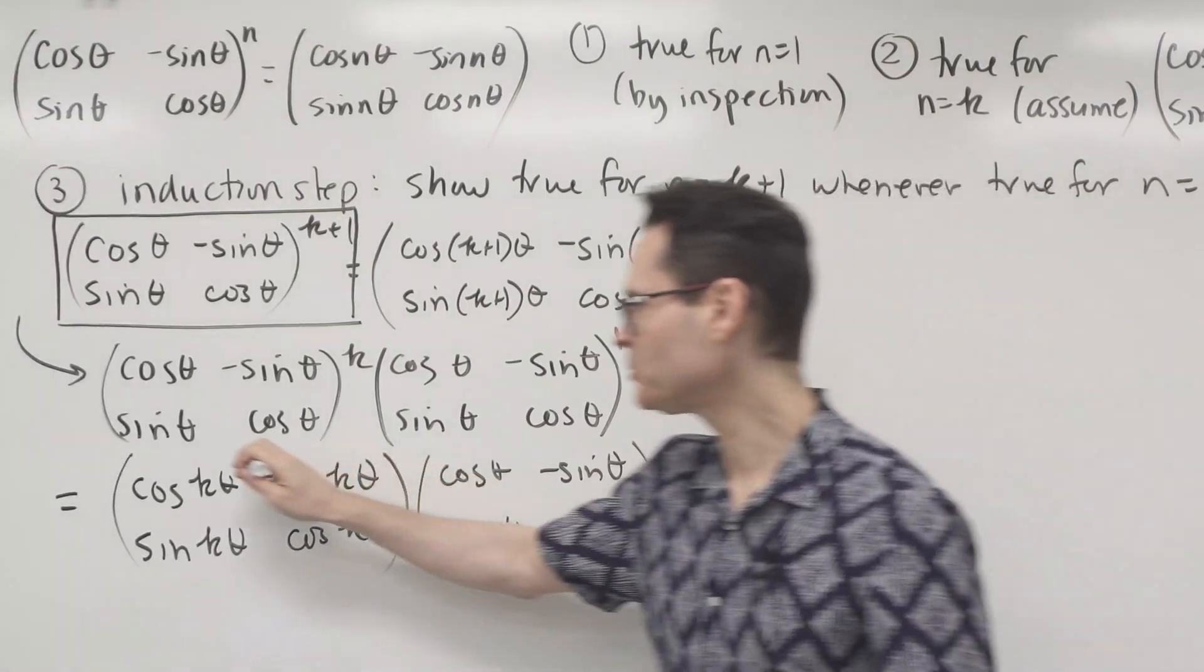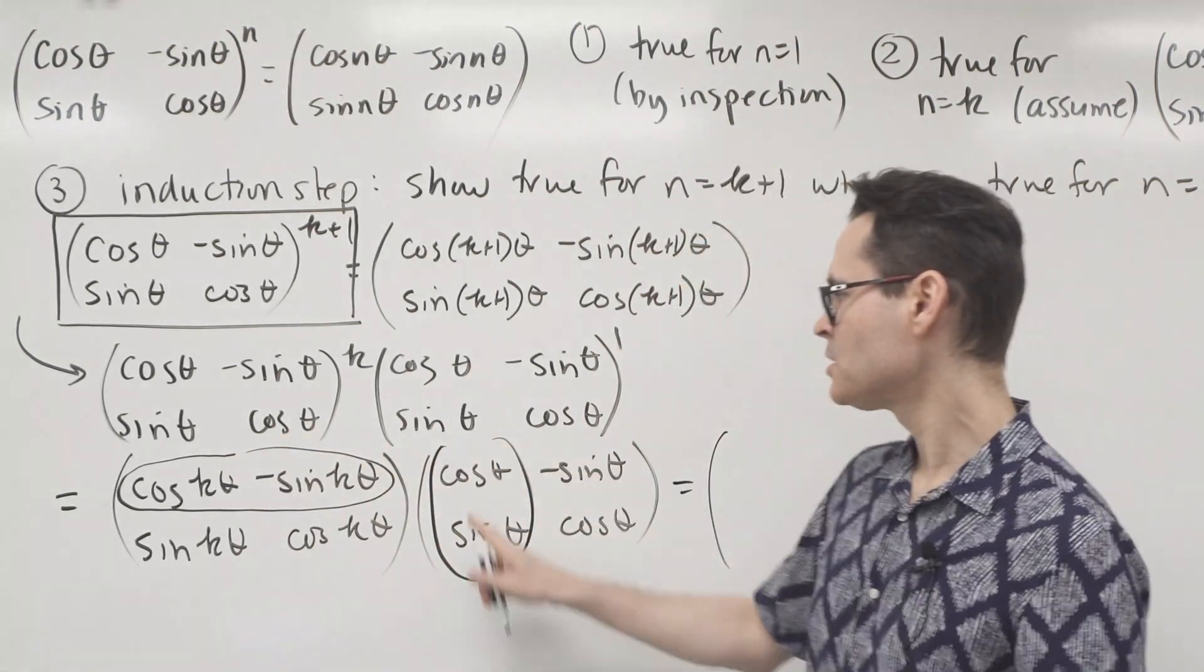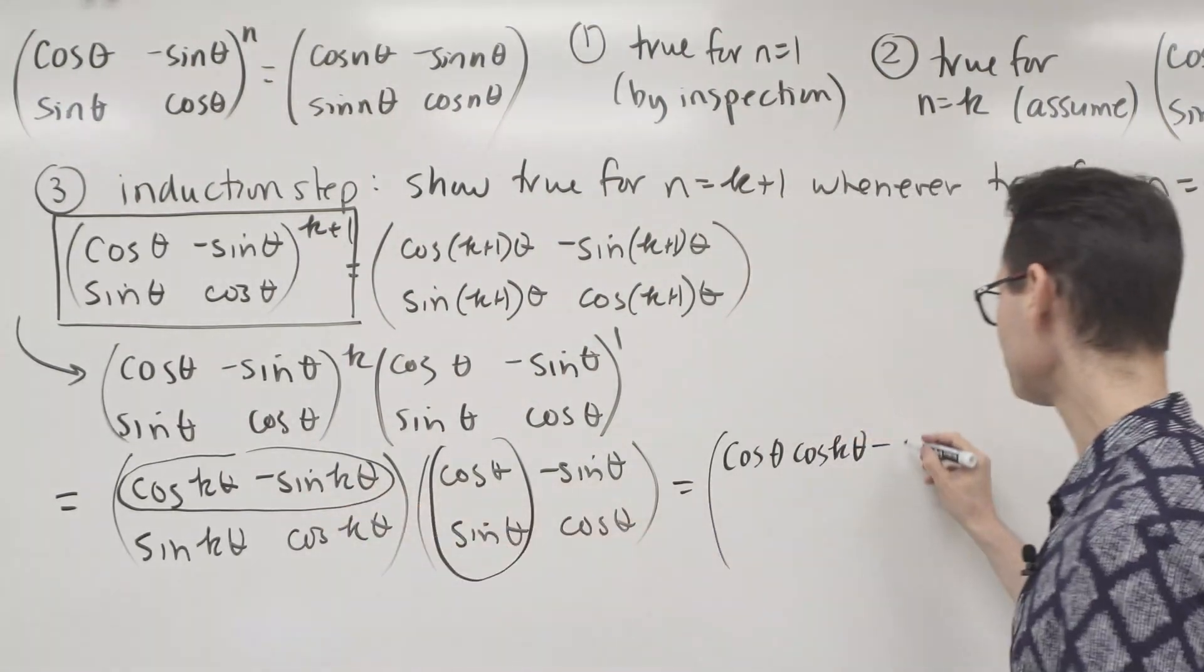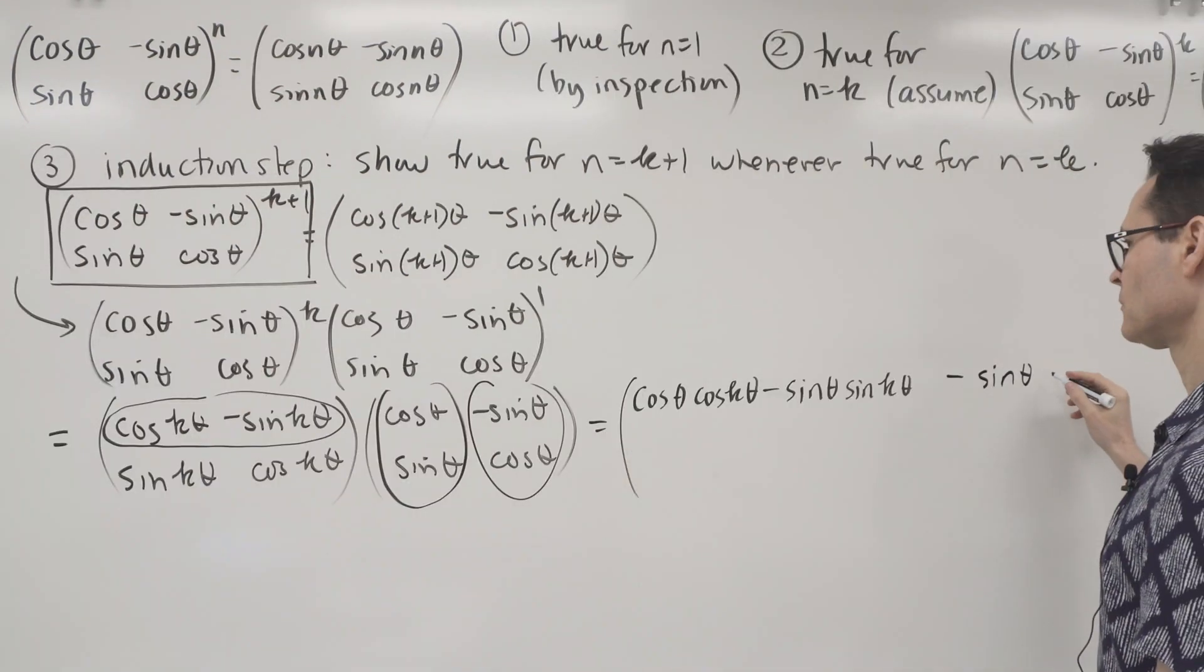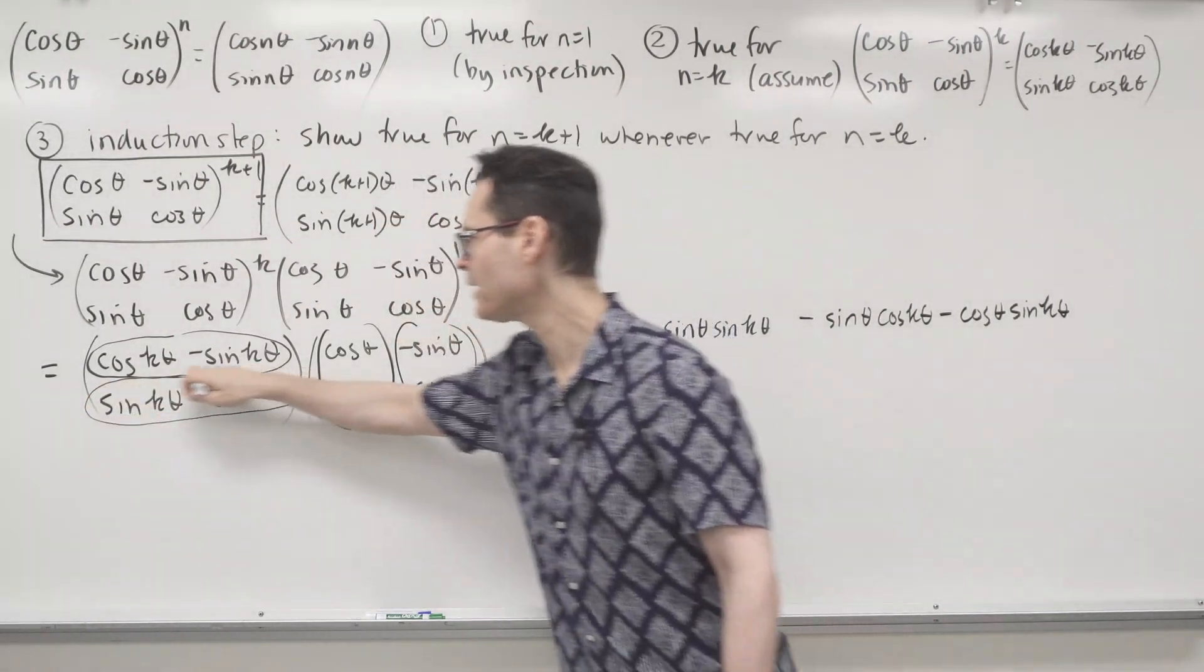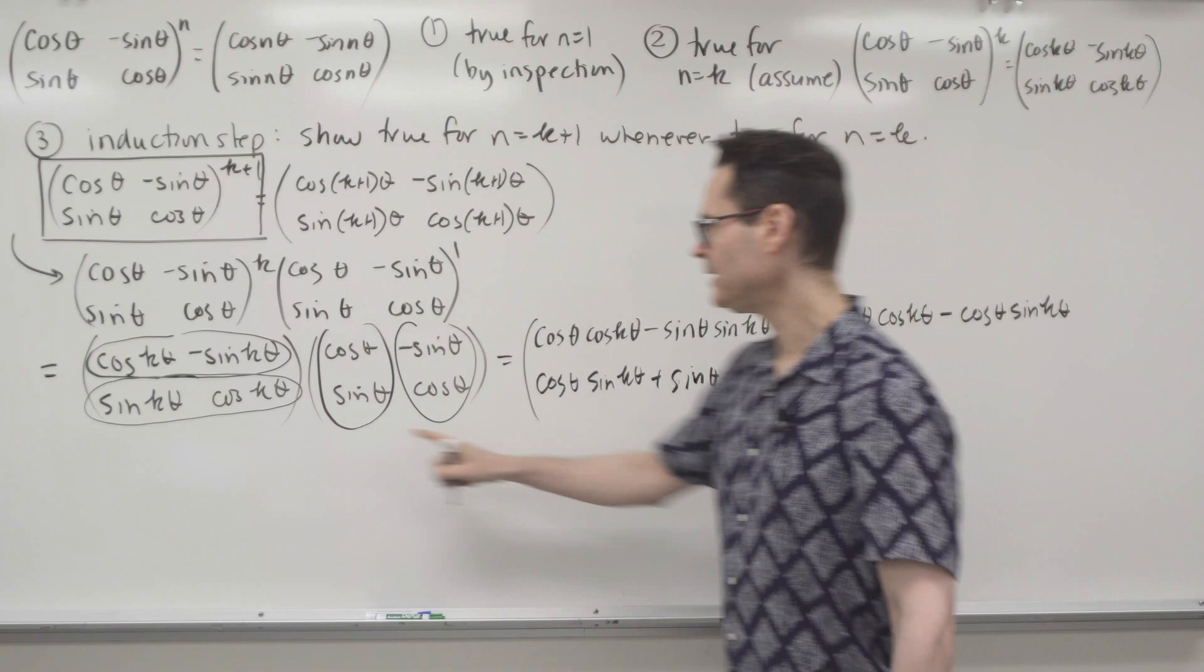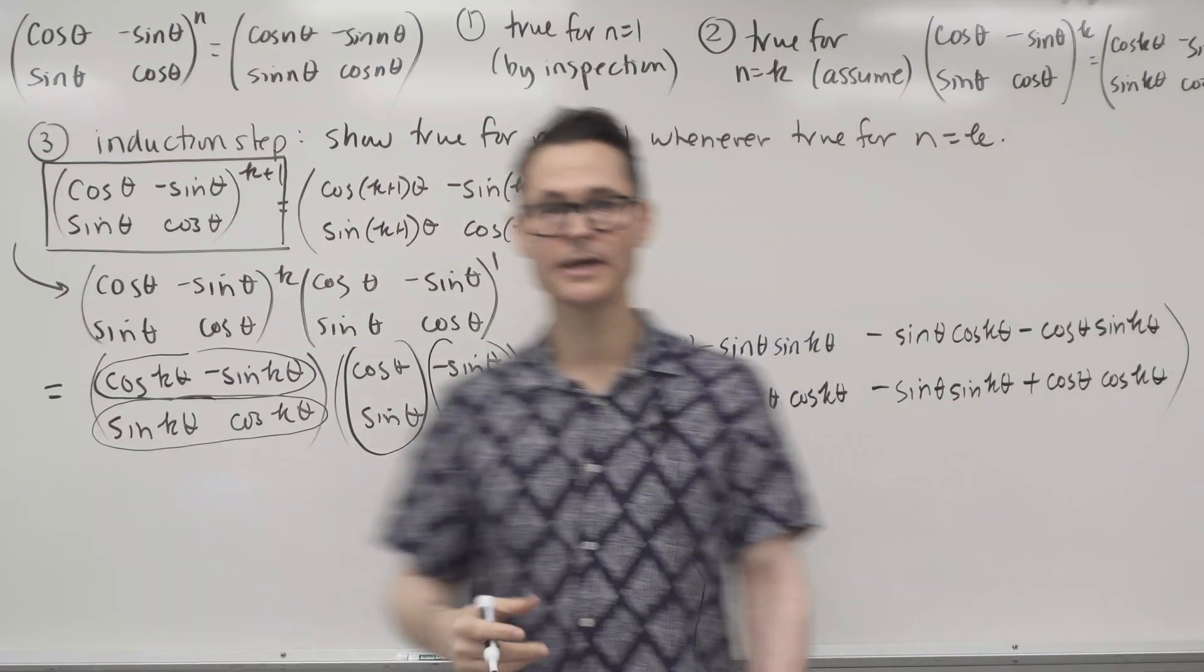In order to do the matrix multiplication, I take the first row and multiply it by the first column. So cos theta times cos k theta plus this times this. So I'm going to pick up a negative there. So I'm going to take the first row, second column. And I'll continue. I'll get the lower left element. So I'll multiply the second row by the first column. And then finally, I'm going to multiply the second row by the second column.